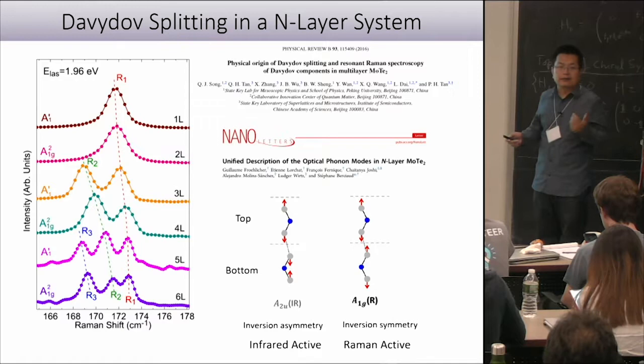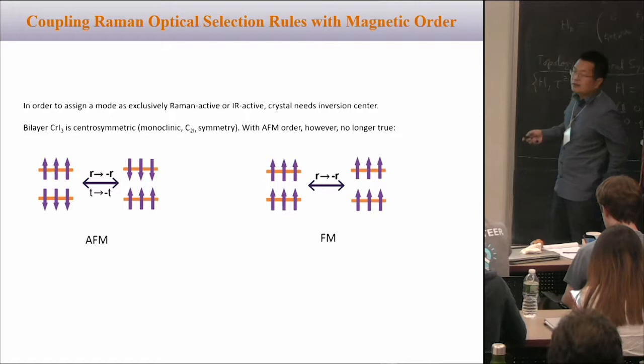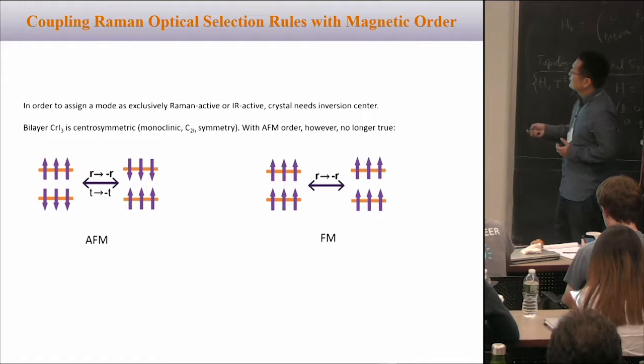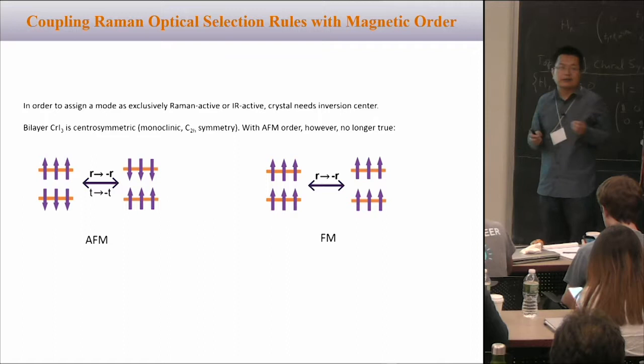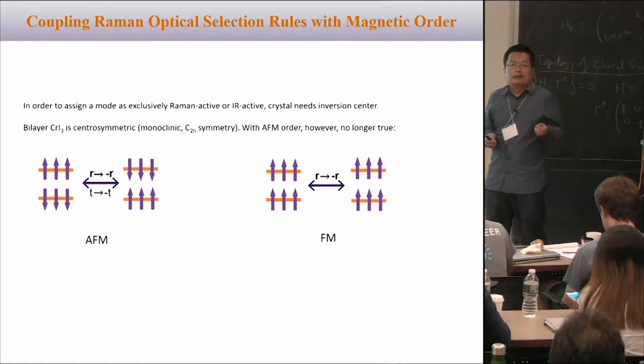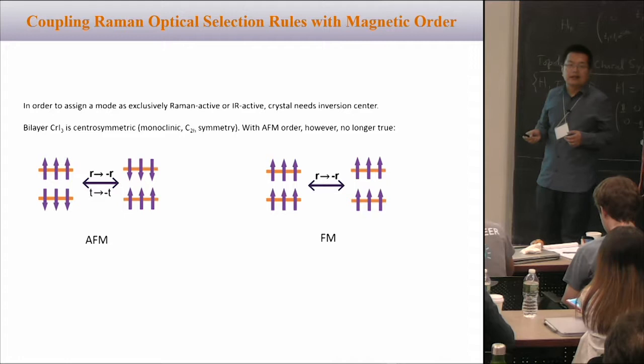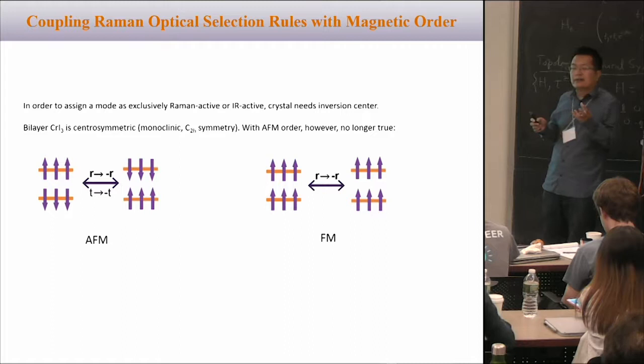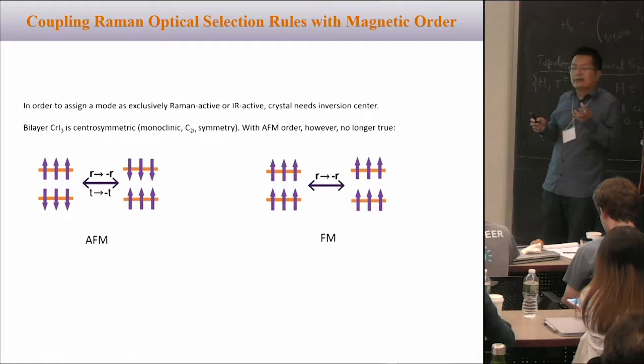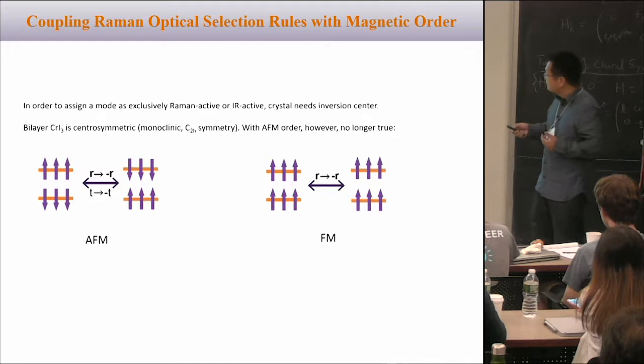We should only see one mode, so why can we see this infrared-active but Raman-silent mode? We have to break some symmetry. As we discussed this morning for second harmonic generation: the crystal symmetry itself is centrosymmetric, but once we add the layered antiferromagnetic order, the inversion symmetry actually breaks. Once the inversion symmetry breaks, the Raman-silent but infrared-active mode now becomes Raman active. Then if we apply a magnetic field to align spins in both layers, the inversion symmetry restores and this mode becomes Raman silent again. In other words, by controlling the magnetic order we control the Raman optical selection rule — by controlling the symmetry of the crystal.